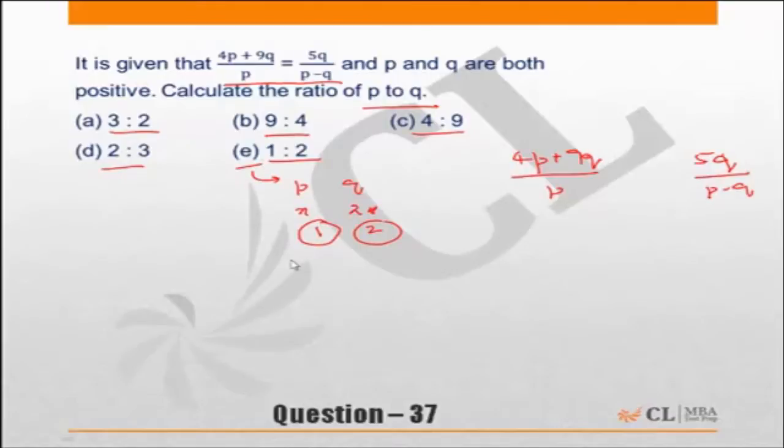If I put p equal to 1 and q equal to 2, that's what choice e says. It satisfies choice e completely. When I substitute, the left hand side becomes 4 plus 18, 22 upon 1. So this is equal to 22.